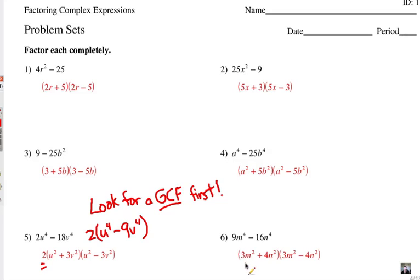Number six is 3m squared plus 4n squared and 3m squared minus 4n squared. Hope you did well. Let's take a look at another problem set.